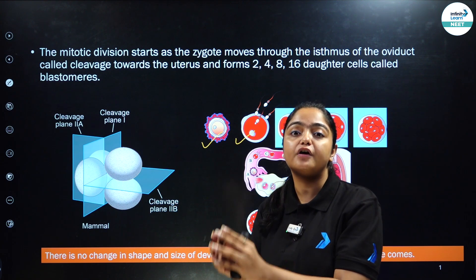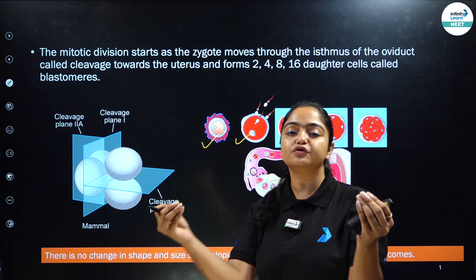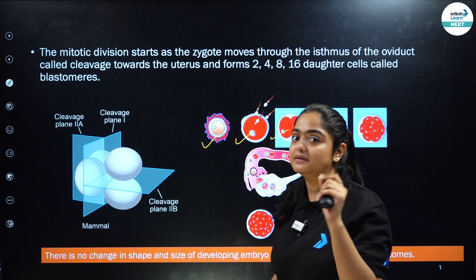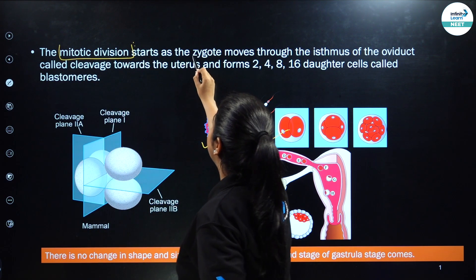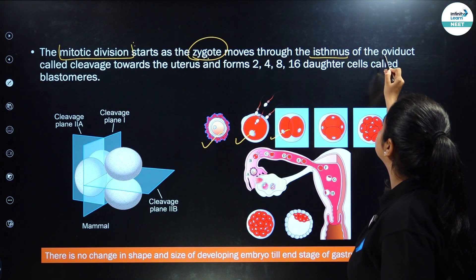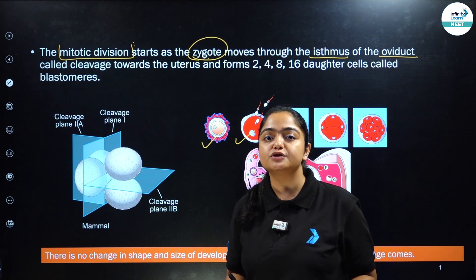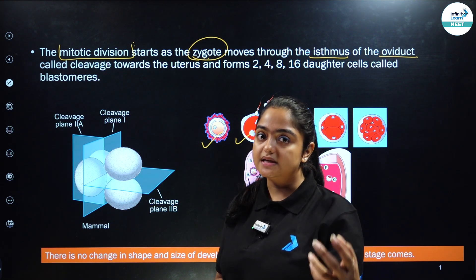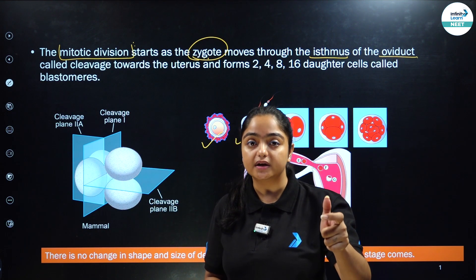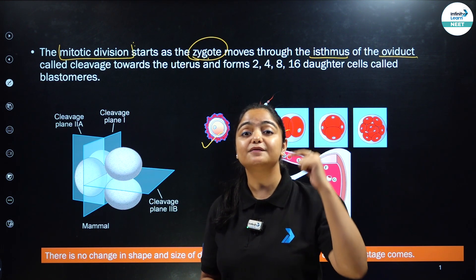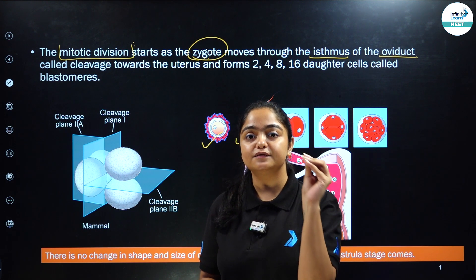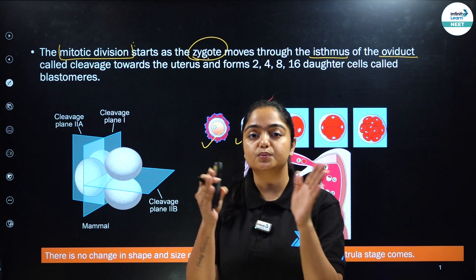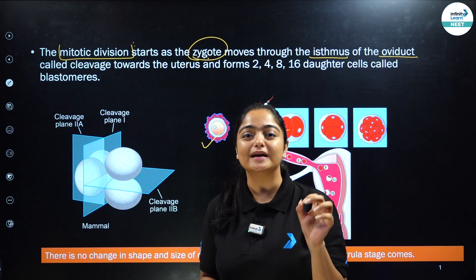When the sperm fuses with the secondary oocyte, it forms the first diploid cell, because the sperm and secondary oocyte are both haploid cells. When they fuse together they form a diploid cell. Then mitotic division starts as the zygote moves through the isthmus of the oviduct. Fertilization takes place in the ampullary region of the oviduct (fallopian tube), and once done, the zygote moves to the isthmus where cell division continues.